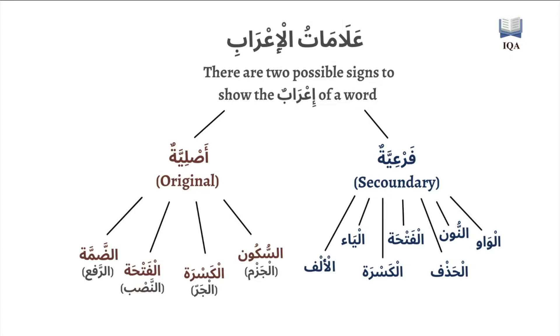I'rab is defined as the change that occurs at the end of a word because of the change of the active grammatical elements entering upon it.